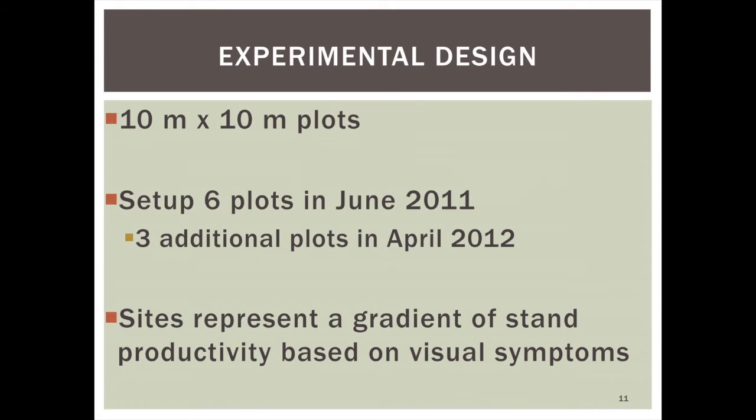We set up 10 by 10 meter plots on each site: six plots established in June 2011, with three additional plots added the following spring. Between sites, we selected plots to represent a gradient of tree performance — some with poor performance showing stunted growth, foliar discoloration, and needle dropping, and some with good performance showing strong leader growth and healthy green appearance — to identify differences between these sites.